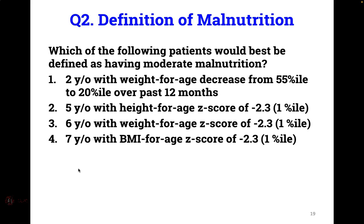Before shifting gears, a question to summarize the definitions of malnutrition: BMI or weight for length more than two standard deviations below the mean is considered moderate malnutrition as a single data point. This is also a reminder that weight for age is not incorporated into the definition, which eliminates options based on weight for age, while height for age may be considered to define severe malnutrition — but only if it's more than three standard deviations below the mean.